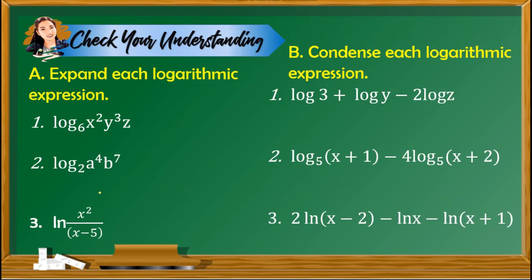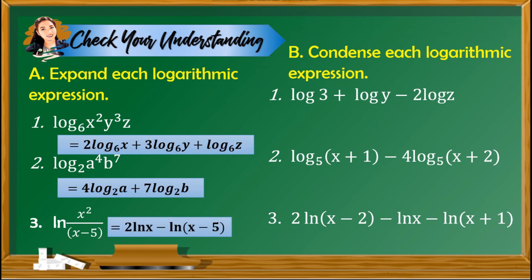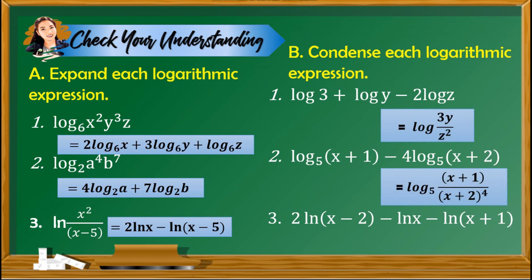Now I would like you to apply what you've learned. Check your understanding by doing this activity — you may pause the video to answer. Let us check your work. Letter A, expand each logarithmic expression. Number 1: 2 log x with base 6 plus 3 log y with base 6 plus log z with base 6. Number 2: 4 log a with base 2 plus 7 log b with base 2. Number 3: 2 ln x minus ln(x minus 5). Letter B, condense each logarithmic expression. Number 1: log of (3y over z squared). Number 2: logarithm of (x plus 1) over (x plus 2) raised to the power 4 with base 5. Number 3: ln of (x minus 2) squared over (x times (x plus 1)).